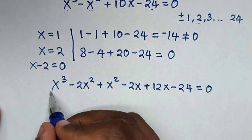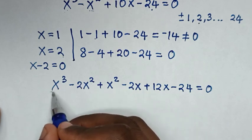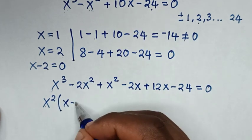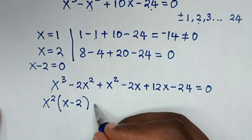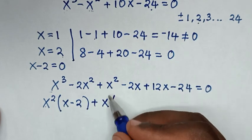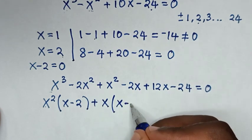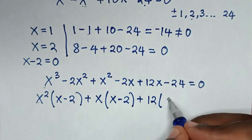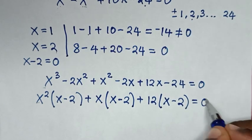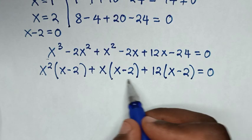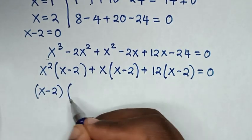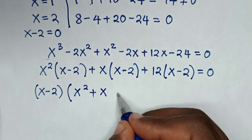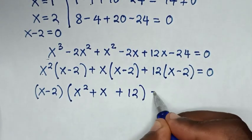For the first group, x² is common, so we take x² out of the bracket: x² times (x minus 2). For the middle group, x is common, so we take x out: x times (x minus 2). For the last group, 12 is common: 12 times (x minus 2). Now (x - 2) is common across all groups, so we factor it out: (x - 2)(x² + x + 12) = 0.